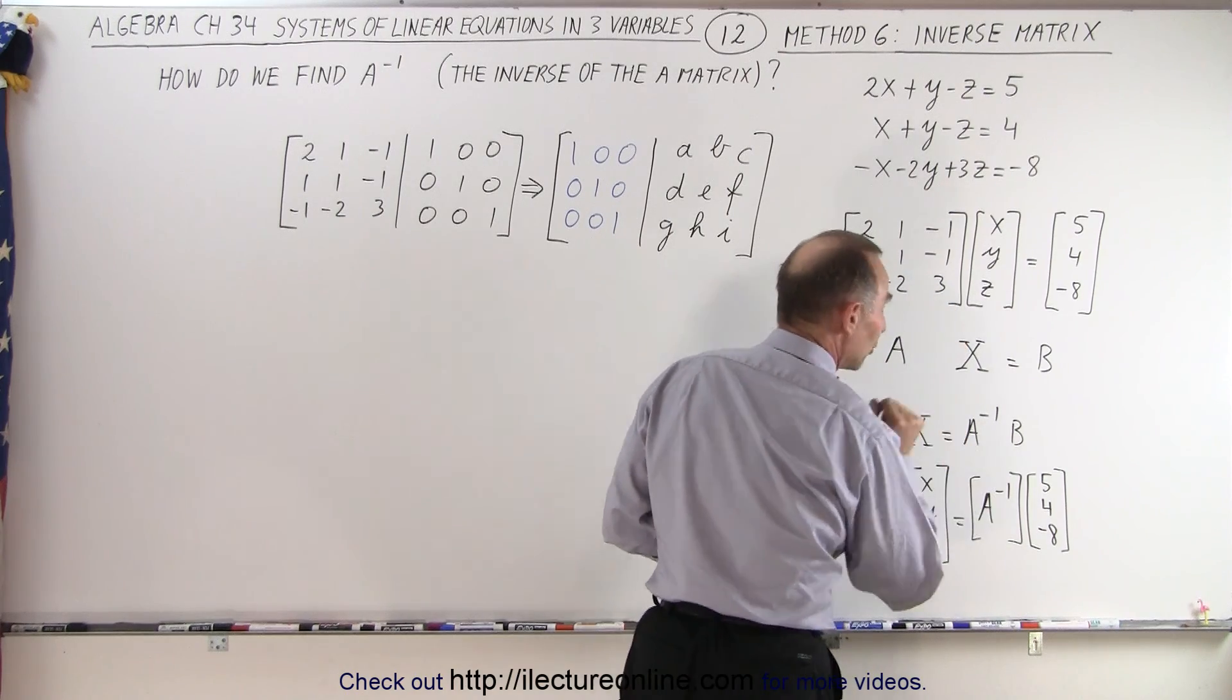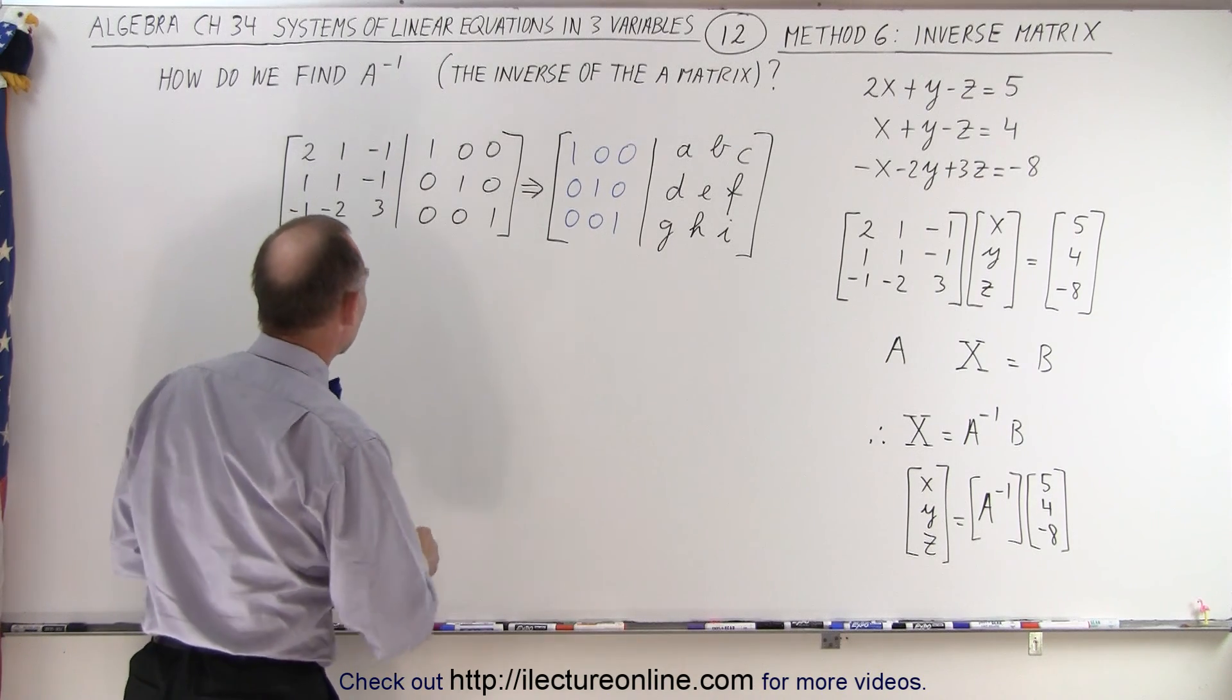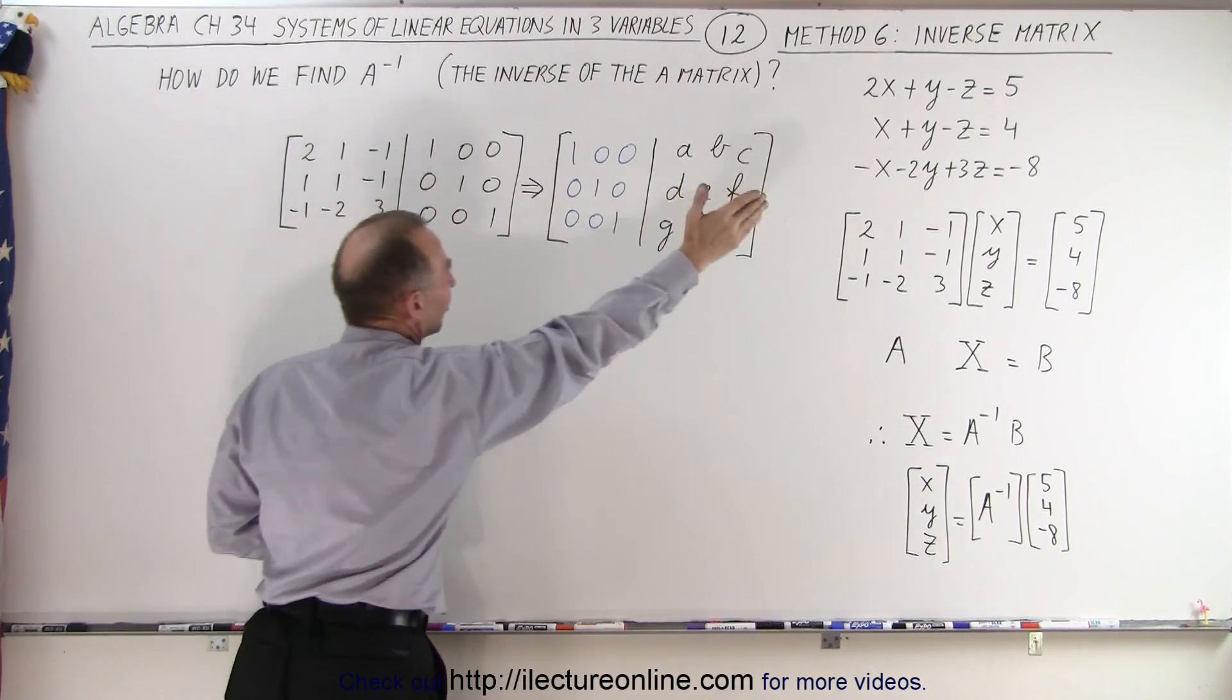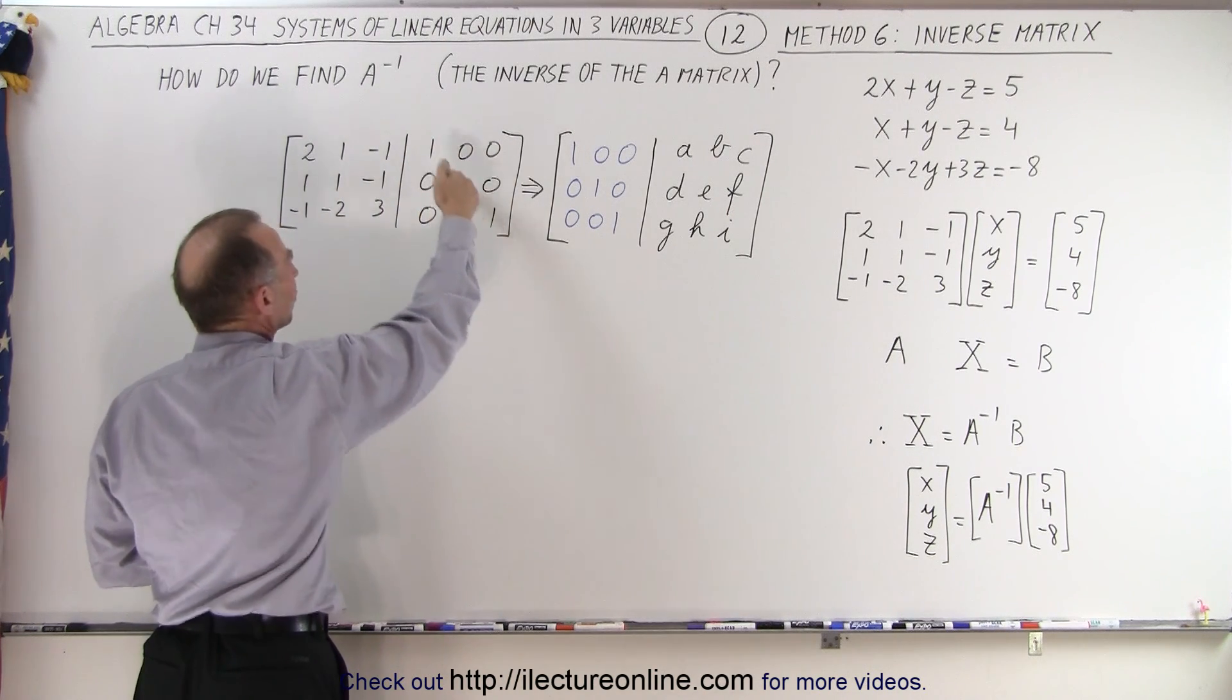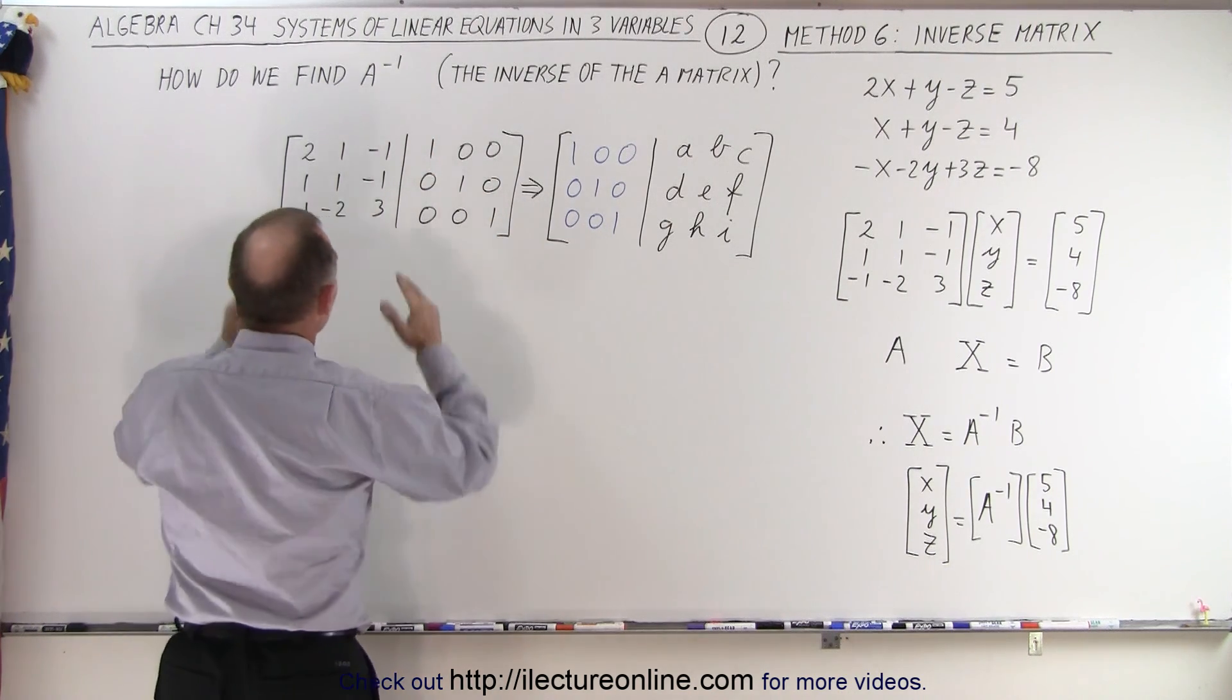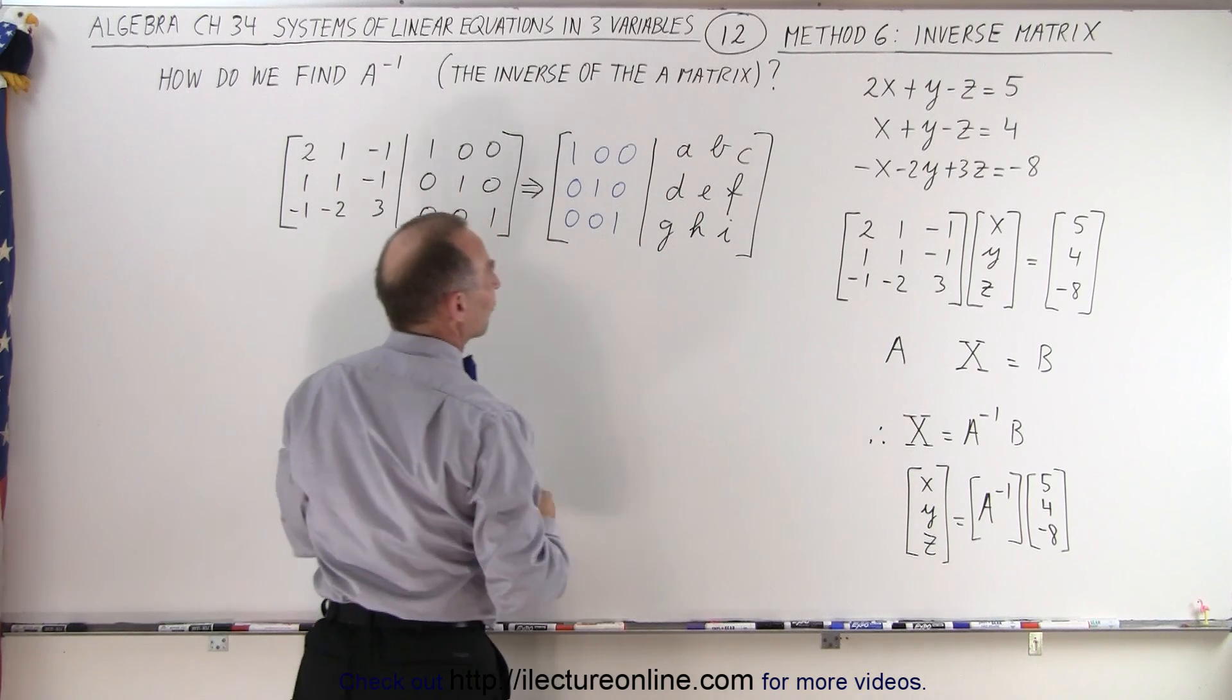Here's the matrix A. How do we find the inverse? It turns out we do it the same way like we do the reduced row echelon form. But instead of just having the B matrix in our augmented matrix, here are the coefficients of x, y, and z in our three equations. But here we put what we call the identity matrix. Ones across the diagonal, zeros everywhere else. That's the identity matrix. And then we manipulate the left side until the left side looks like this. And on the right side will be the inverse matrix.